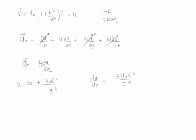Now that we have the velocity and its derivative, we substitute back into the acceleration equation. We obtain V_0 (1 plus R to the third over x to the third) multiplied by negative 3 V_0 R to the third over x to the fourth. This is the value of the acceleration at any position x.